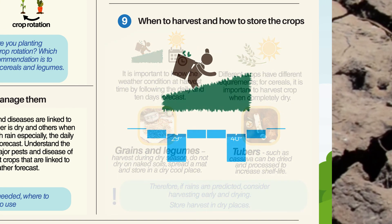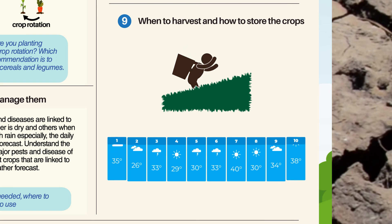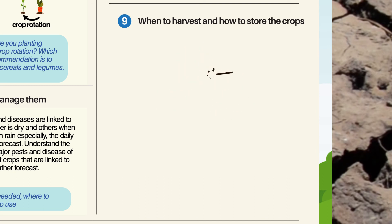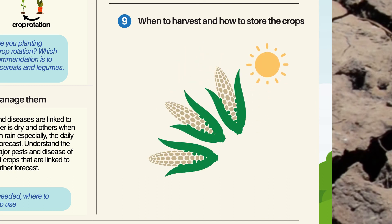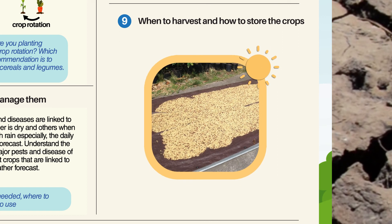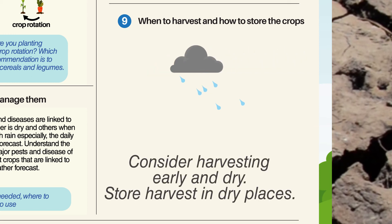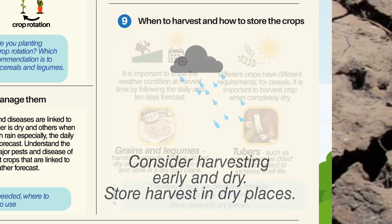When to harvest and how to store crops: It is important to know the weather condition at harvest time by following the daily and 10-day forecast. Different crops have different requirements. For cereals, it is important to harvest crops when completely dry. Grains and legumes harvested during season — do not dry on naked soil; spread a mat and store in a dry, cool place. Tubers such as cassava can be dried and processed to increase shelf life. Note: if rains are predicted, consider harvesting early and drying. Store harvest in dry places.